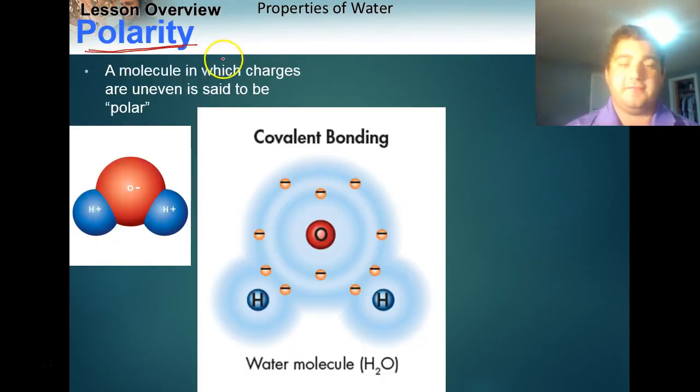And this is called polarity. So a polar molecule is one that is neutral, but has slightly uneven charges. So like we said on the last slide, water is neutral, ten protons, ten electrons. But as we talked about in the last video, and we talked about in class, the electrons tend to hang out towards oxygen.